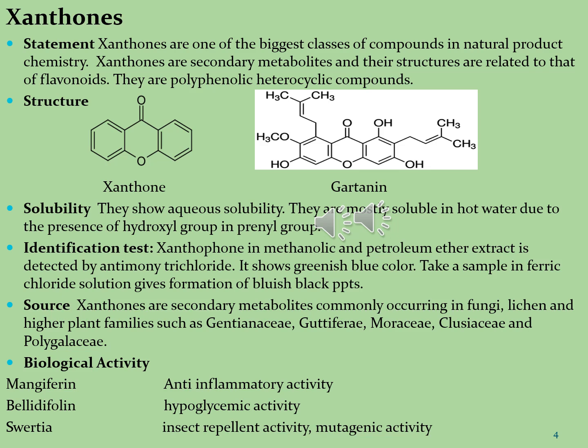Xanthones in methanolic and petroleum ether extracts are detected by antimony trichloride — it shows a greenish-blue color. A sample in ferric chloride solution gives formation of bluish-black precipitates, which indicates the presence of xanthone phytoconstituents. Xanthones are scanty metabolites commonly occurring in fungi, lichen, and higher plant families such as Gentianaceae, Clusiaceae, Moraceae, Clusiaceae, and Polygalaceae.